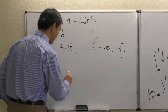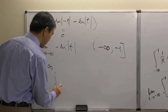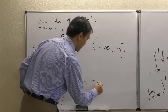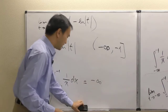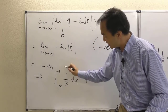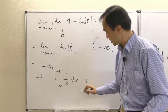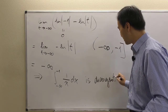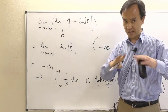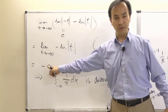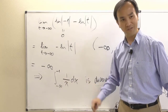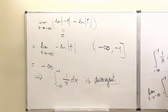The limit problem turns out to be a negative infinity limit. Combined with the cases we've learned, anytime the limit answer runs into positive infinity, negative infinity, or a non-existing value, the integral is divergent. So the integral of one over x from minus infinity to negative one is divergent.